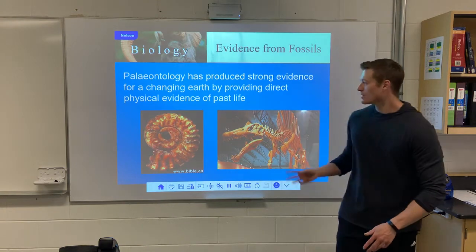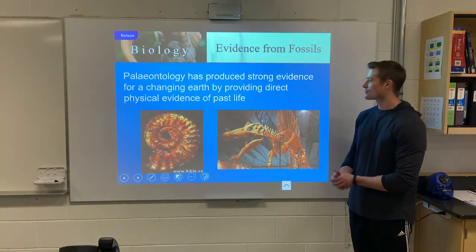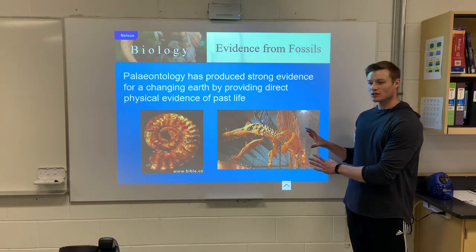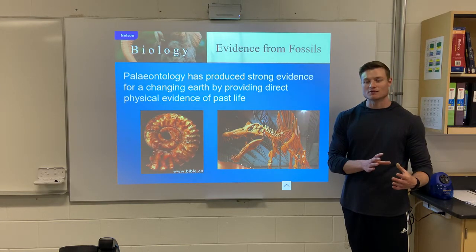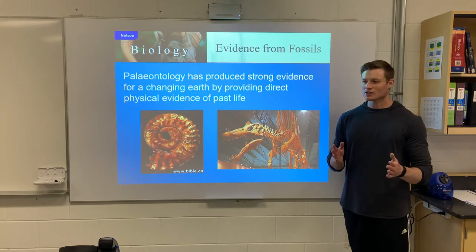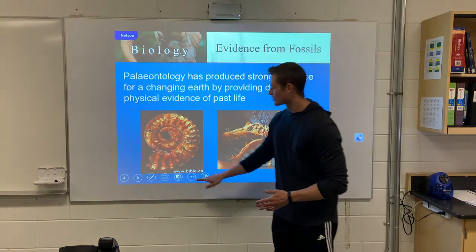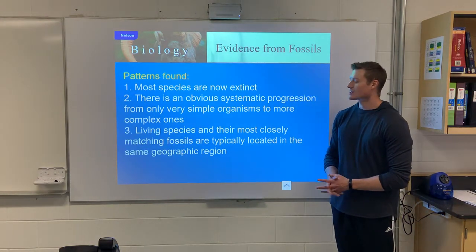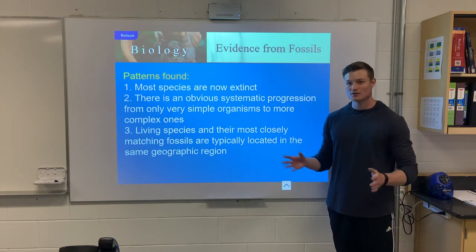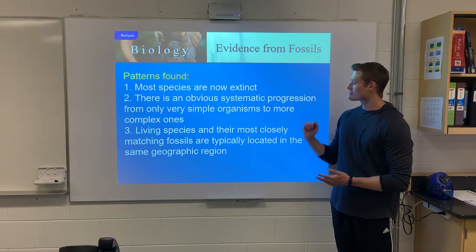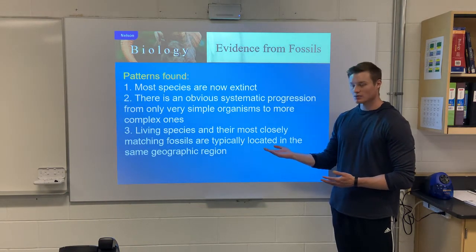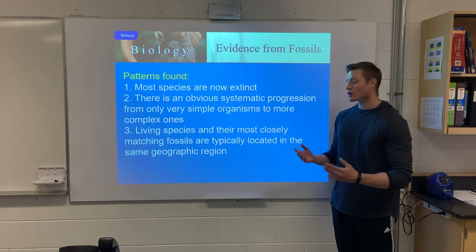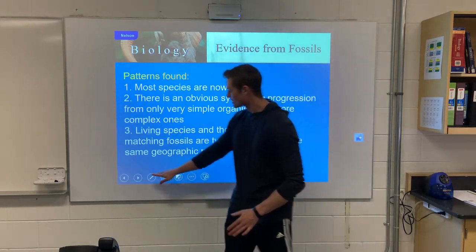The first bit of evidence comes from paleontology, or fossils. There's a strong connection: we look at organisms that no longer live on Earth and compare them to organisms that live now, and we notice similarities or a logical progression. A few patterns have emerged: number one, most species are now extinct; number two, there's a systematic progression from very simple to very complex organisms; and number three, species and their most closely matching fossils are usually found in the same geographic area.